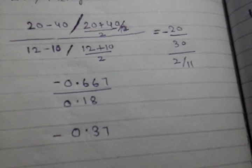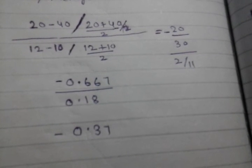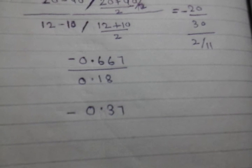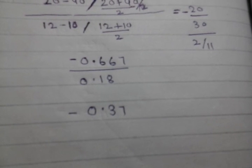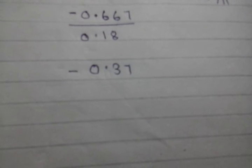So we will get minus 20 upon 30 with a ratio of 2 divided by 11. So we will get minus 0.667 divided by 0.18. The value of arc elasticity of demand is minus 0.37.